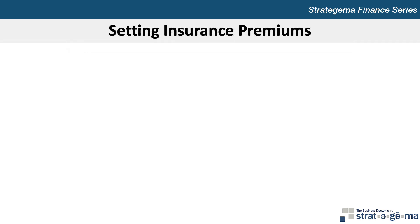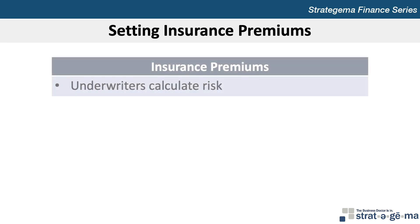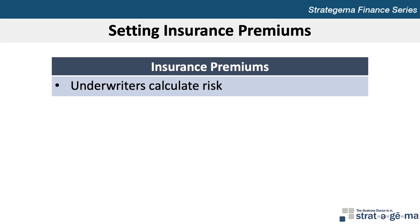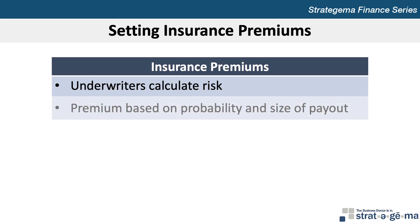Let's begin with setting insurance premiums. Insurance companies employ underwriters to calculate the risk of specific insurance policies. The companies decide which types of policies to offer based on the premiums they can charge versus the potential value of claims to be paid to policyholders. The premium charged by an insurance company for each policy is based on the probability that it will have to provide a payment to the insured or the insured's beneficiary, and the potential size of the payment.